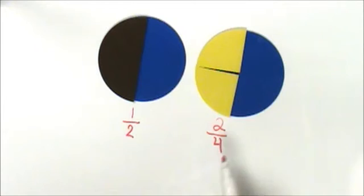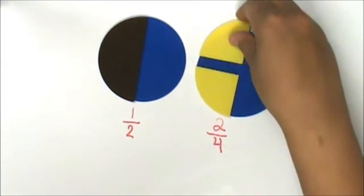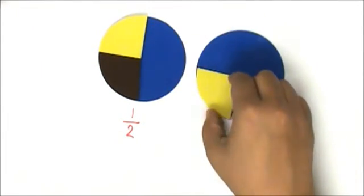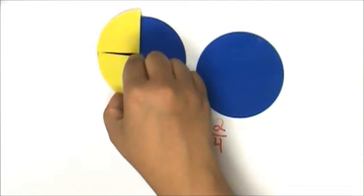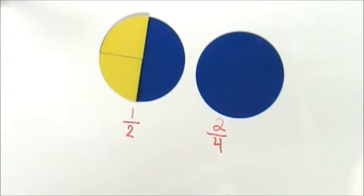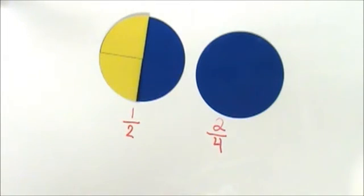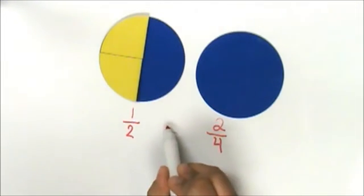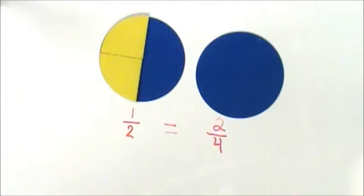Let's check by placing two fourths on top of one half. When I placed two fourths on top of one half, it showed that both covered the same area — the same portion of the whole. That means that one half is equivalent to two fourths. Let's try another strategy to determine if two fractions are equivalent.